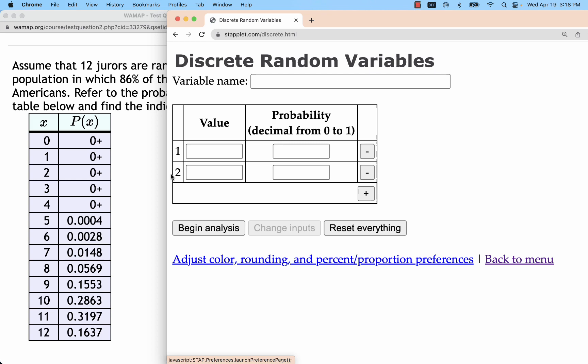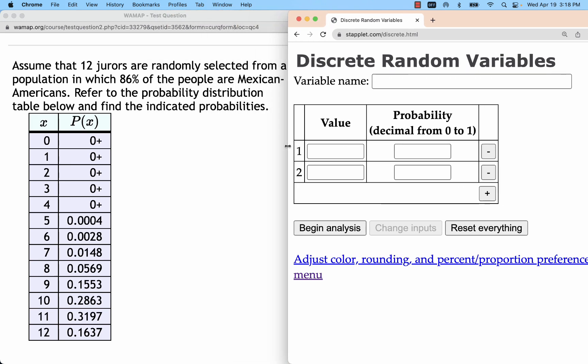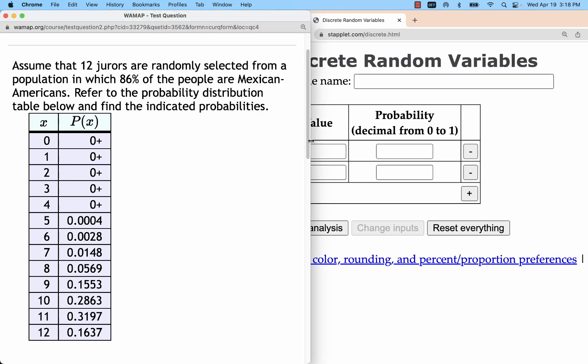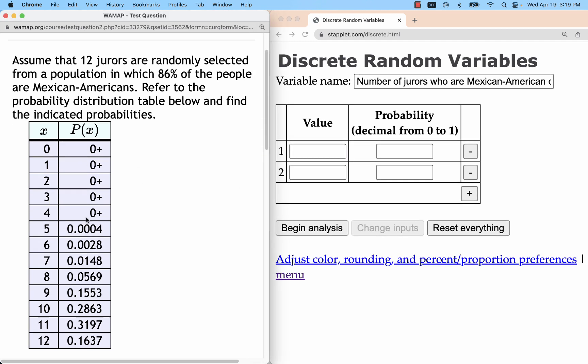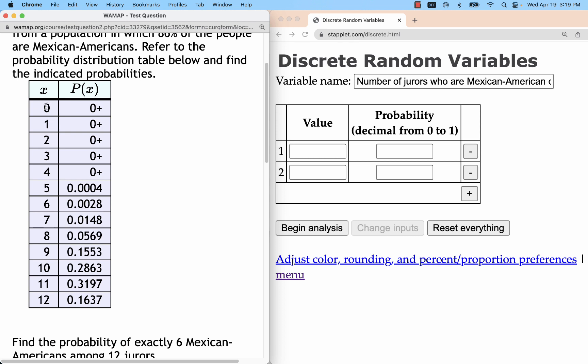And in staplet.com, go to discrete random variables. This is a very easy to use applet. It doesn't have a whole lot of options like Google Sheets. You have a lot more you can do with it, but it's so much easier to use. What I usually try to do is describe the variable name. And then we'll enter each value. And for the zero plus, we'll just put a zero. You could leave those off, but I like to be able to visualize the whole graph all the way down to zero.